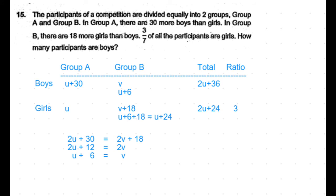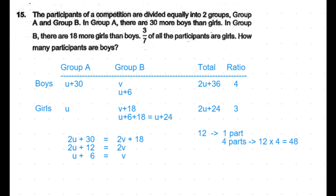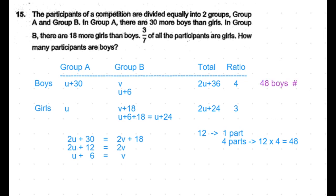It is given that three-sevenths of all the participants are girls, so 2u + 24 represents 3 parts. The remaining 4 parts are boys. The difference between total boys (2u + 36) and total girls (2u + 24) is 12, and this difference corresponds to 1 part in the ratio. Therefore, 4 parts — the total number of boys — equals 12 × 4 = 48. So 48 participants were boys.